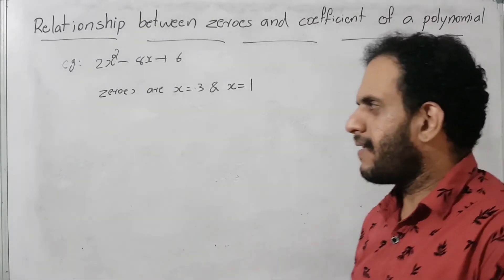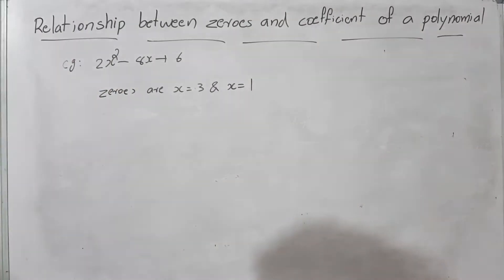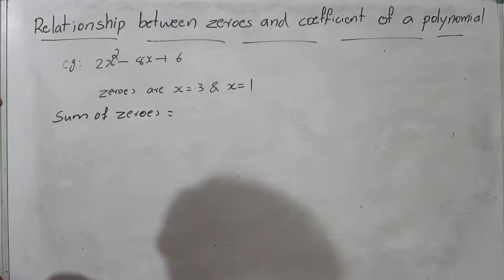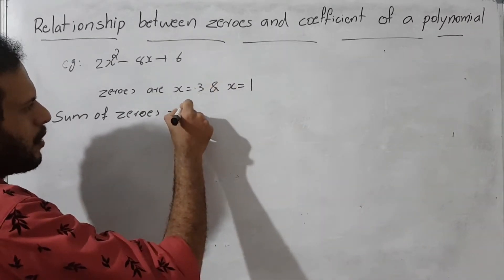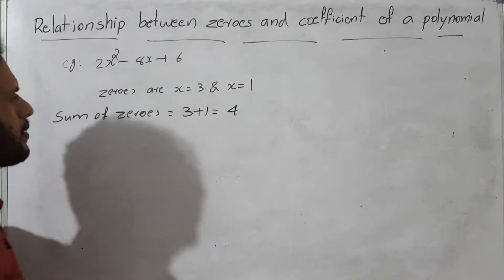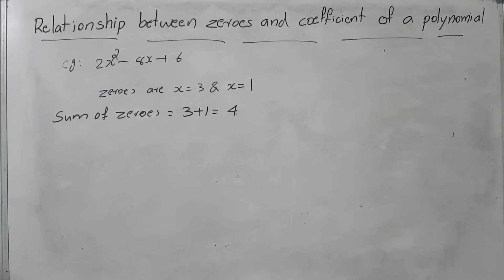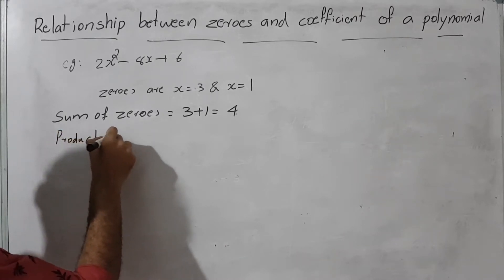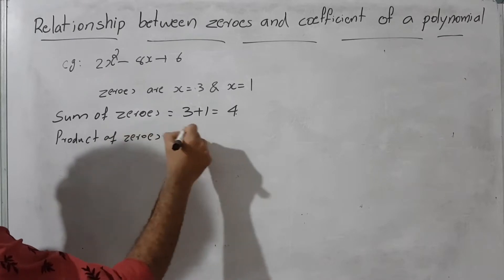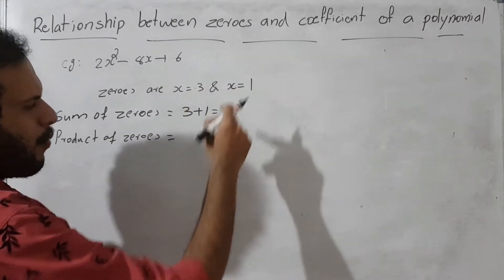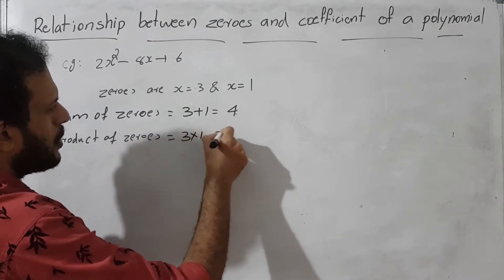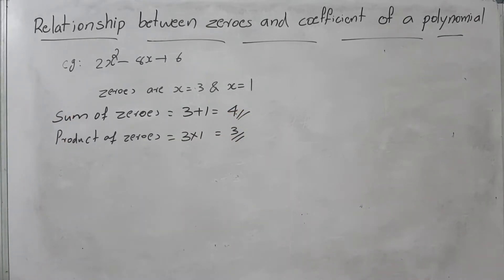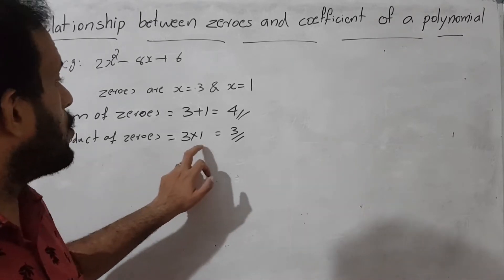Now we find the sum and product of zeros. Sum of zeros equals 3 plus 1 equals 4. Product of zeros equals 3 into 1 equals 3.